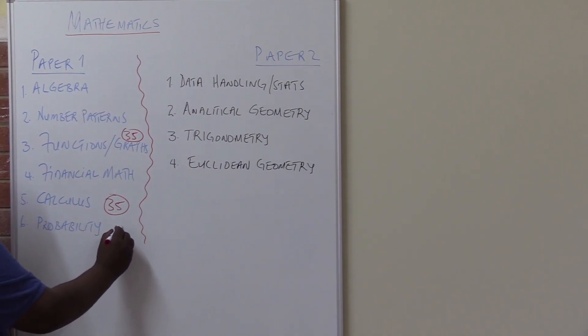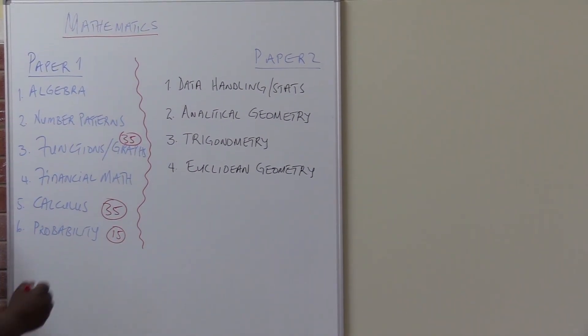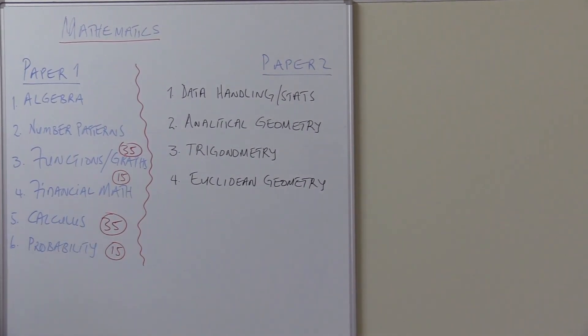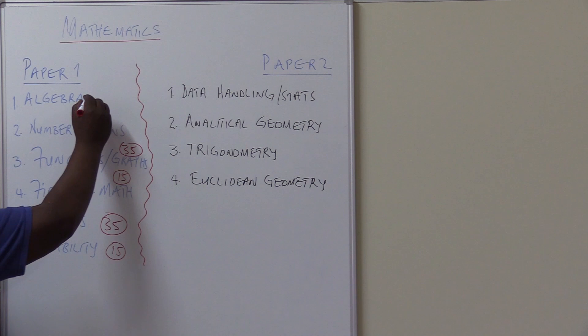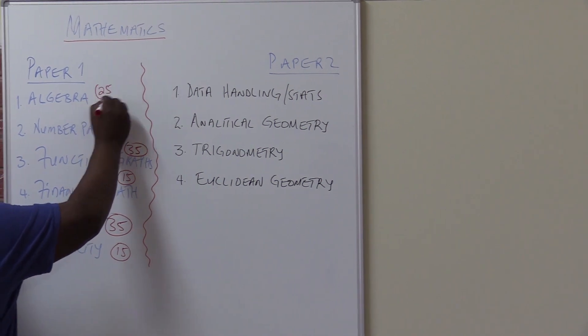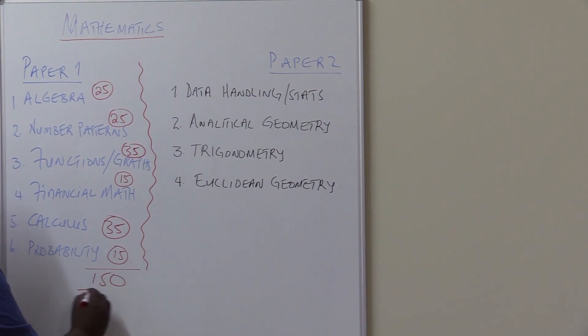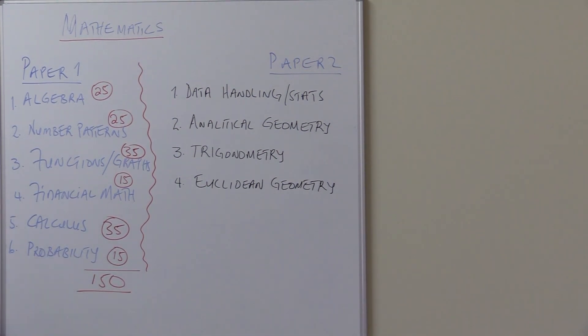Where do we get the other marks from? Probability is the least marks with 15 marks. So is financial math, it also has 15 marks. So you've got about 100. These first two will be about 25 marks, 25 marks. That's how your paper will look like at the end of the year. Altogether, we'll be working on 150 marks.